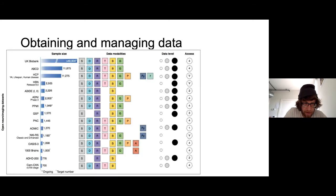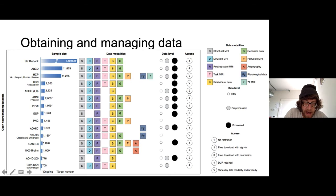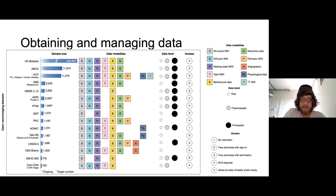This is Figure 1 from our paper — we're listing open source data sets. The rows are the different samples, arranged in increasing order of sample size. Here is a legend showing the different types of data modalities, a column indicating data level, and the axis showing sample size. In terms of data modalities, most of the samples highlighted here have structural data, all have resting state, some have task data, and most tend to have behavioral data, whether basic demographic information or richer behavioral characterizations.